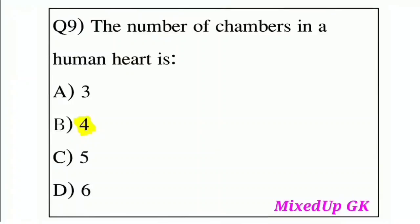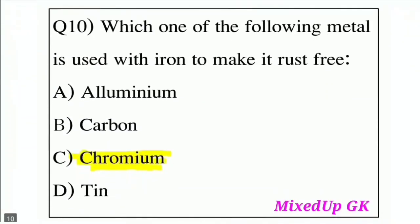Question 10: Which one of the following metals is used with iron to make it rust-free? Option A: Aluminum, Option B: Carbon, Option C: Chromium, Option D: Tin. The correct answer is Option C: Chromium, which is used with iron to make it rust-free.